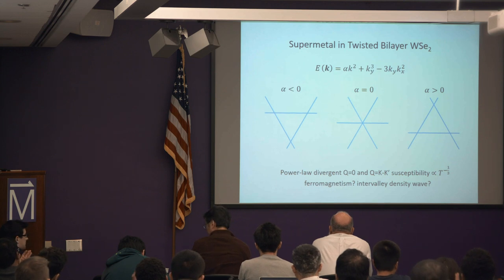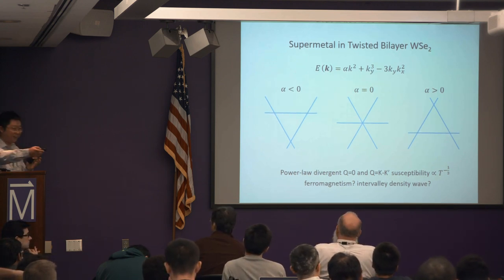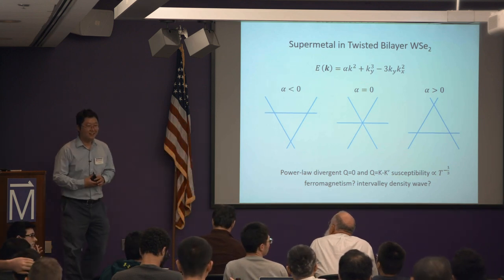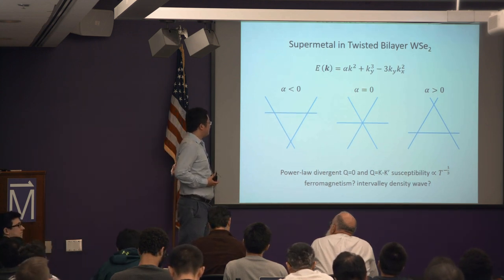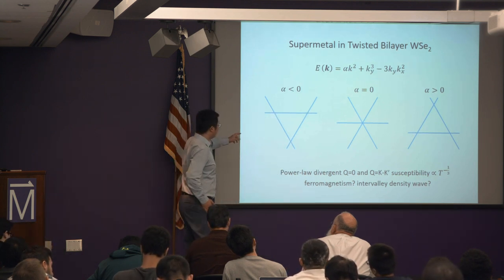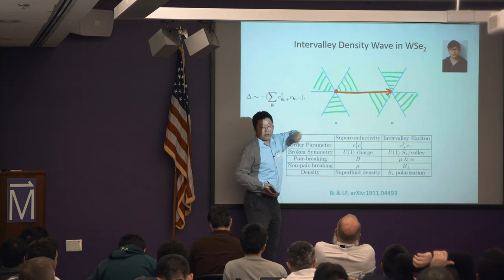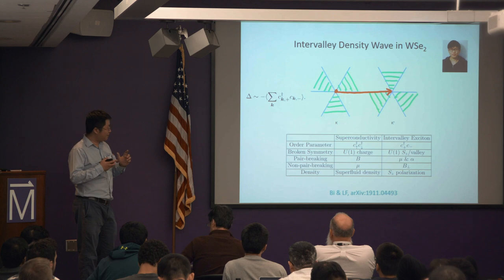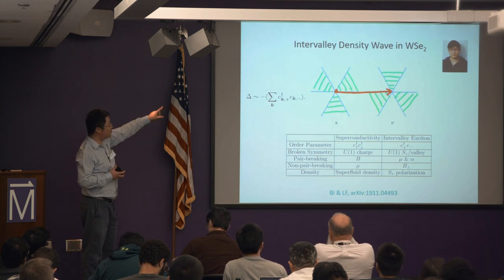I'll stop here and leave the rest for the next lecture, where we'll discuss the intervalley density wave. Thank you. [Question from audience about pair density wave.] I think pair density wave is strongly disfavored in this case. The pair density wave can be thought of as pairing within each valley. In this case, the occupied states and unoccupied states are at exactly opposite momenta relative to the center. Very different from the conventional case where K and −K are equal energy — here they are opposite energy.